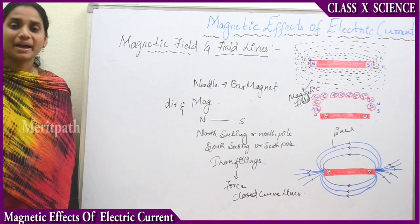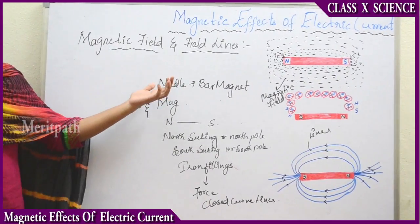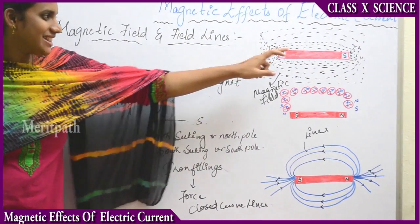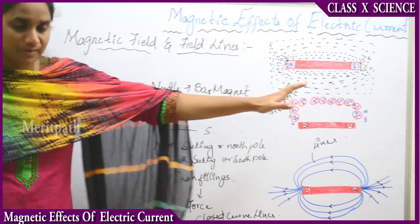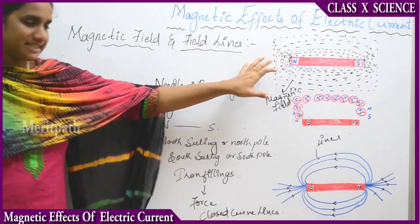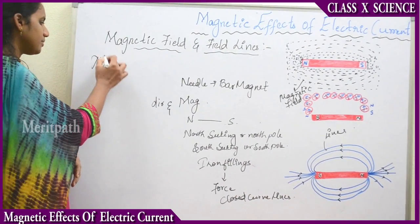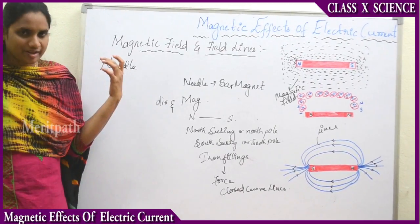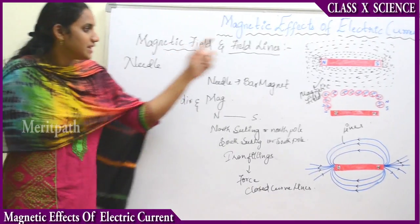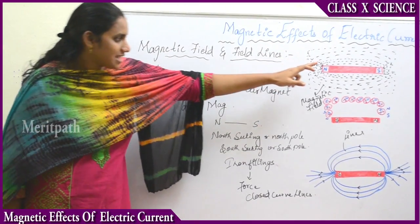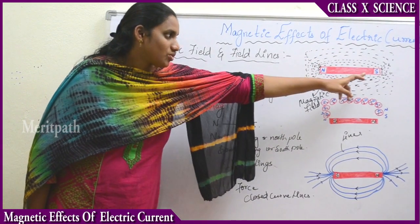Let us discuss the magnetic field and field lines. If you observe here, I have drawn the features. This is the magnet which is consisting of two poles, that is the North Pole and South Pole. These two poles are determined with the help of the compass needle. This needle will be deflecting when a magnet is brought near to it. This needle deflects when it comes near to the North Pole, and it attracts towards the South Pole.